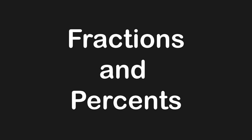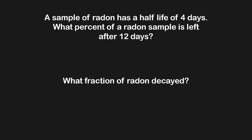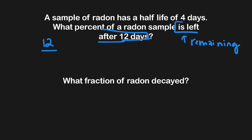Now that we've seen the difference between decayed and remaining questions, let's look at fractions and percent-based questions for radioactive decay. This question asks: a sample of radon has a half-life of four days. What percent of a radon sample is left after 12 days? First, we identify this as a remaining question — they're asking what is left. We take our total time of 12 days and divide by four days per half-life, giving us three total half-lives overall.